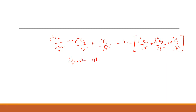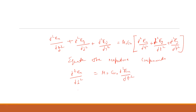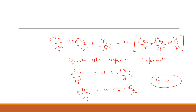Equating the respective components — x with x, y with y, and z with z — we get: ∂²Ex/∂z² = μ₀ε₀ ∂²Ex/∂t², and ∂²Ey/∂z² = μ₀ε₀ ∂²Ey/∂t². Ez is zero, as derived in the previous video lecture on uniform plane waves — the E component along the direction of propagation is zero.